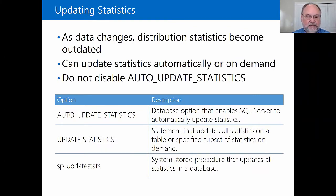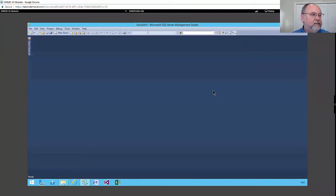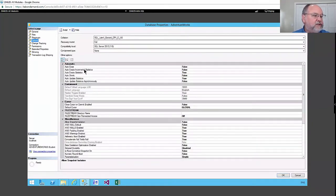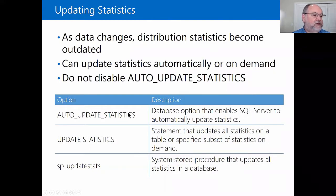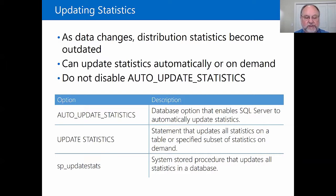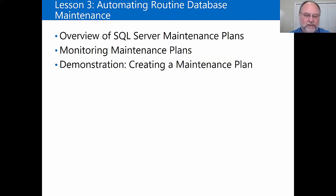Regarding statistics — when we talked about creating a database we covered the automatic options for creating and updating statistics. You can issue the T-SQL command UPDATE STATISTICS or execute the stored procedure sp_updatestats to update all statistics in your entire database. If you have auto-update statistics turned on you should never have to do this manually, but statistics are critically important to server performance so keep that option on.